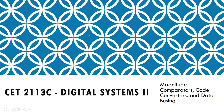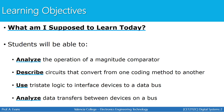Welcome back to Digital Systems 2. In this video we're going to discuss magnitude comparators, code converters, and data bussing. Our objectives are to learn how to analyze the operation of a magnitude comparator, describe circuits that convert from one coding method to another, and discuss data bussing and analyze how data is transferred between devices on a bus.